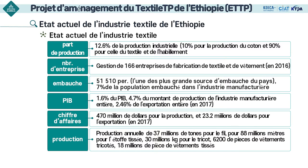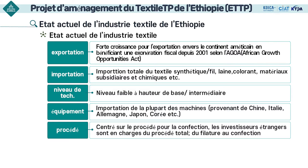L'industrie textile représente 12,6% de la production industrielle totale, 1,6% du PIB, 4,7% de la production manufacturière totale et 2,46% des exportations totales. En termes d'exportation, l'accord AGOA a continué d'être étendu lors de l'exportation vers les États-Unis et l'Europe. Étant donné qu'il existe des avantages à l'exportation en franchise d'impôts et hors quotas, les exportations vers les États-Unis et l'Europe ont augmenté rapidement.